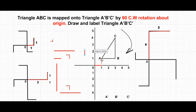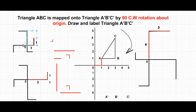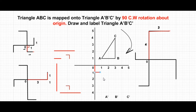From the origin to vertex A, the distance is 1 unit right and 1 unit up. On the plus sign, with 0 as the origin, we mark 1 unit right and 1 unit up. After rotating 90 degrees clockwise, 1 unit right becomes 1 unit down, and 1 unit up becomes 1 unit right. We then plot the corresponding vertex A' as 1 unit down and 1 unit right.